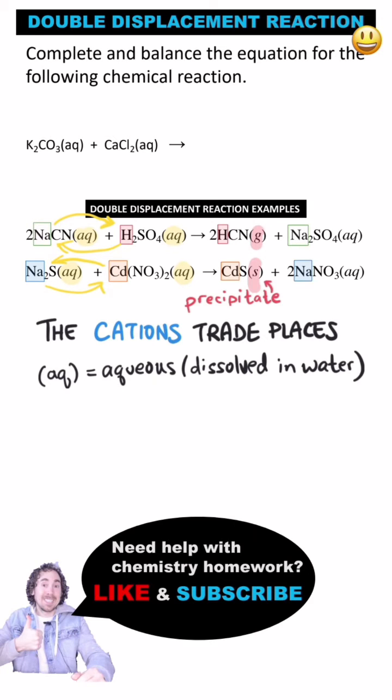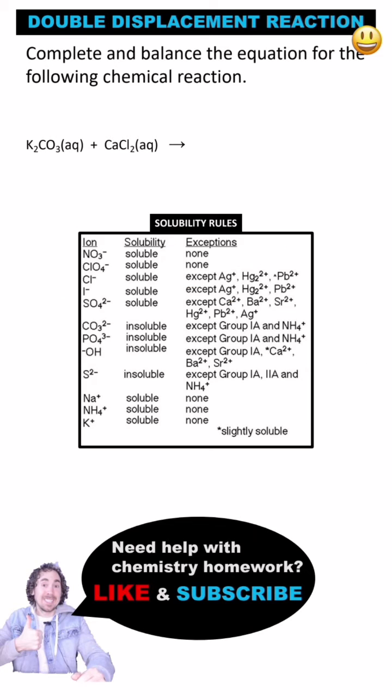Usually it's a gas or a solid called a precipitate. For reactions that produce a solid product, you can figure out the identity of the precipitate using a set of solubility rules.